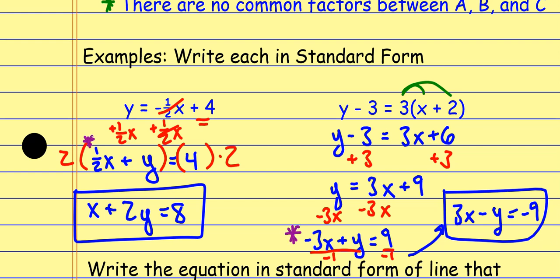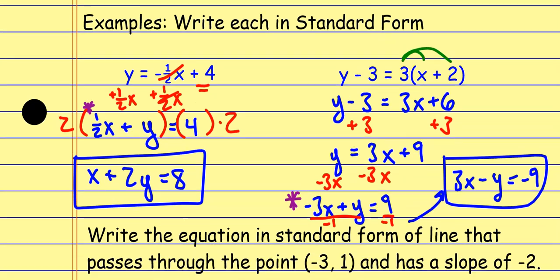So looking at these two examples: that first one was slope-intercept form changed to standard form. The second one was point-slope changed to slope-intercept, then to standard form. This is what we've been doing in the last couple of lessons. Now for standard form, I just keep the process going — start in point-slope form, convert to slope-intercept, then go from slope-intercept to standard form. Just continuing the same process.